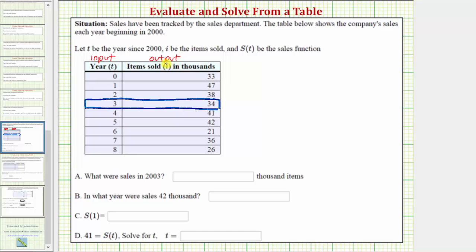Or we can say the function value s of t equals thirty-four, and therefore in the year 2003, the number of items sold was thirty-four thousand. And notice how the units of thousand items is already given.